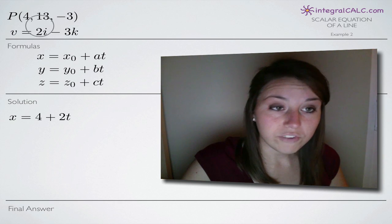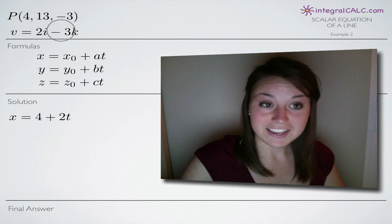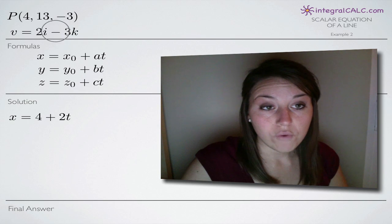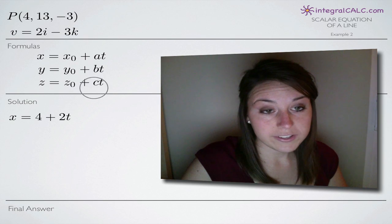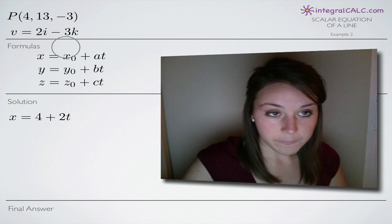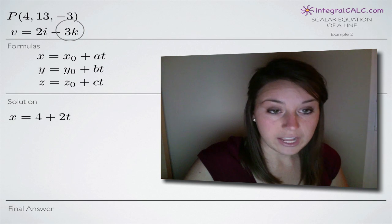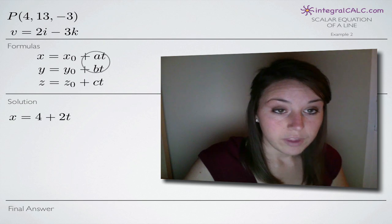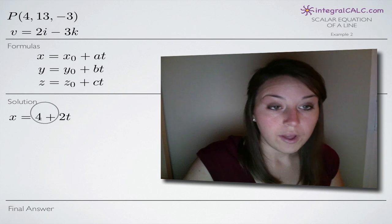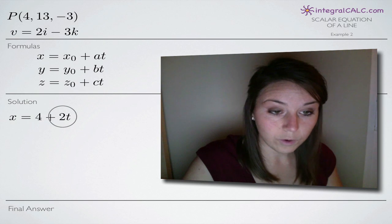So the coefficient on i is what we're going to plug in for a. The coefficient on j, in this case zero, is what we'll plug in for b and the coefficient on k is what we plug in for c. So remember, it's i, j, k, a, b, c. So we'll be plugging in 2 for a, 0 for b and -3 for c. So our scalar equation for x is 4 plus 2t.